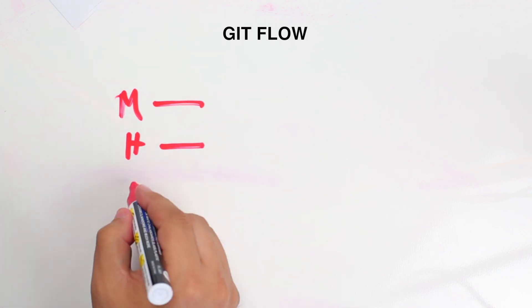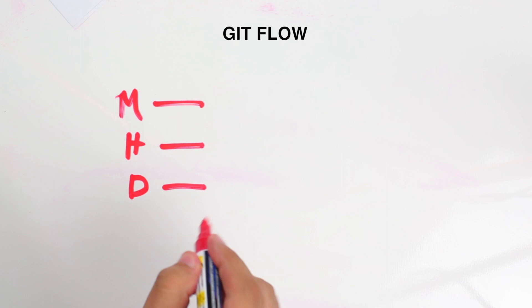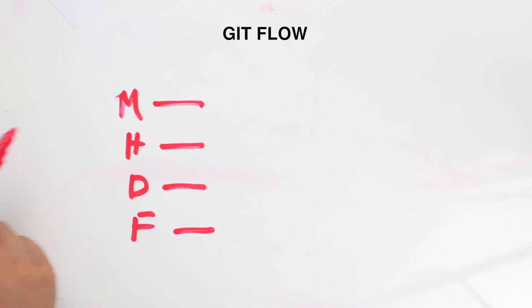The first one is master, the second one is the hotfix branch, develop is the third, and feature is the fourth. I'm going to define all four of these branches.